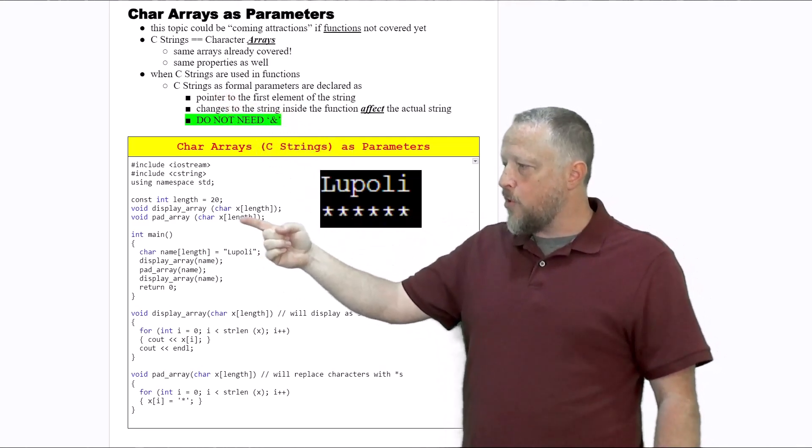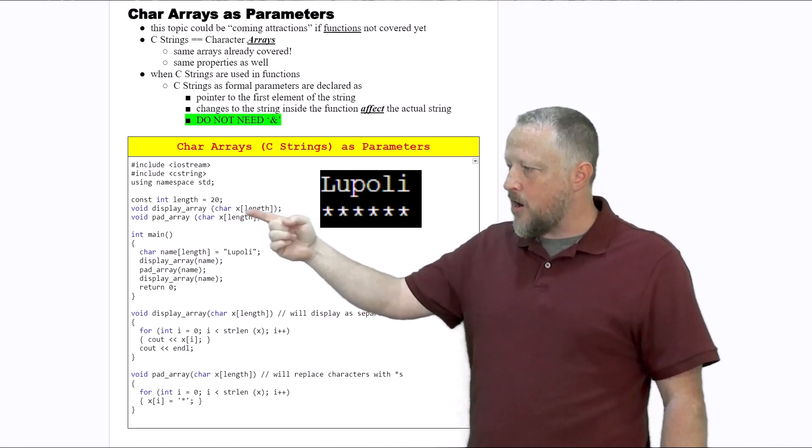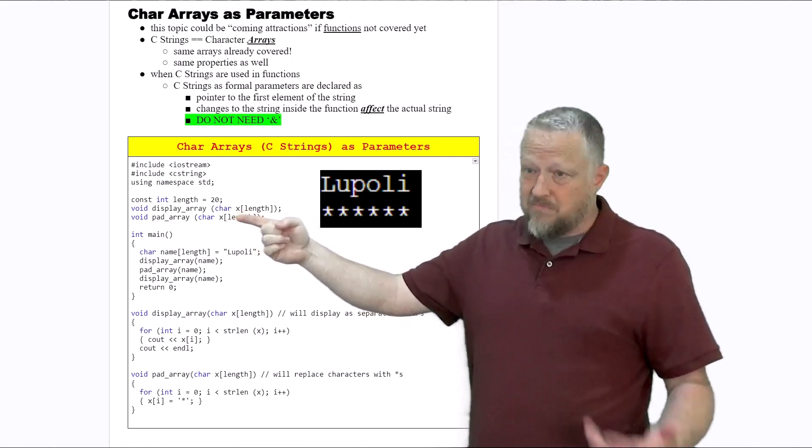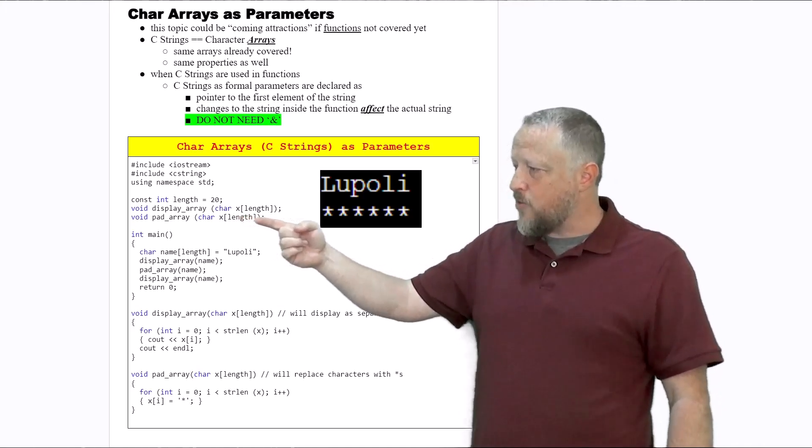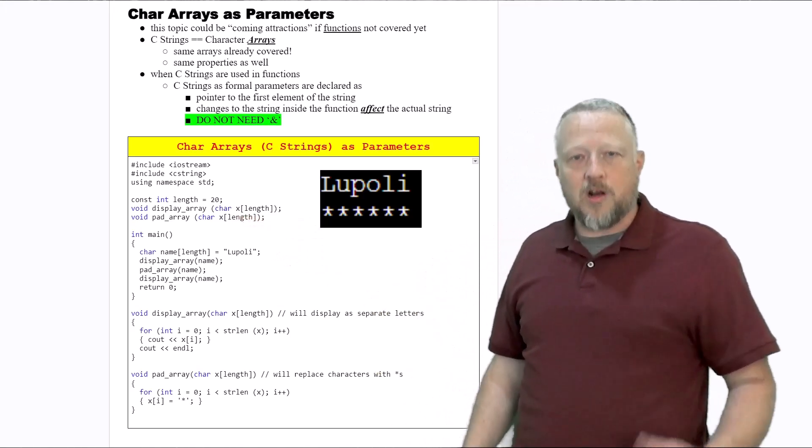If you look at our prototypes here, we have our char, which is - let's remember - each element is a character, our name of the array, and then some type of length that we're going to pass in there.